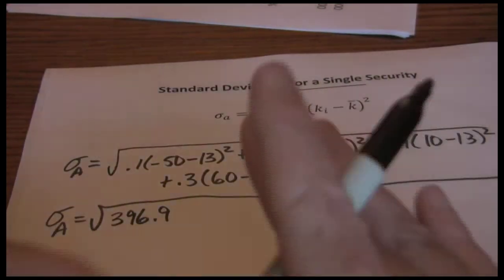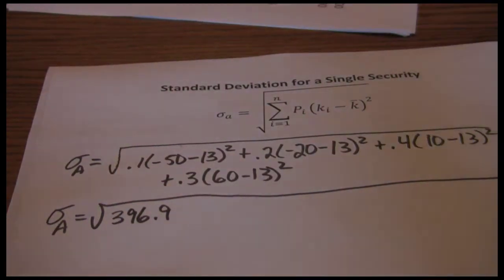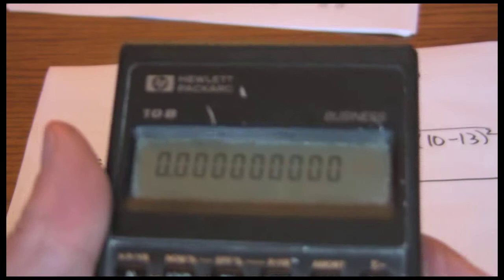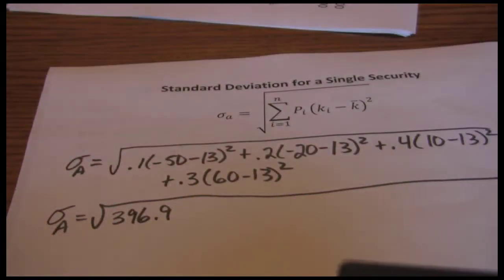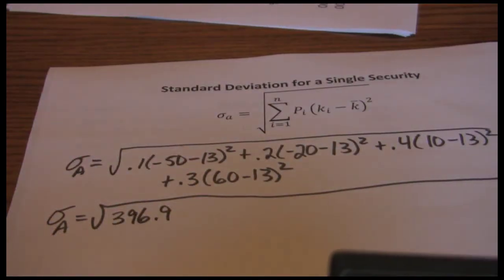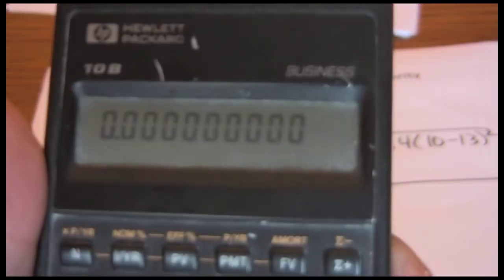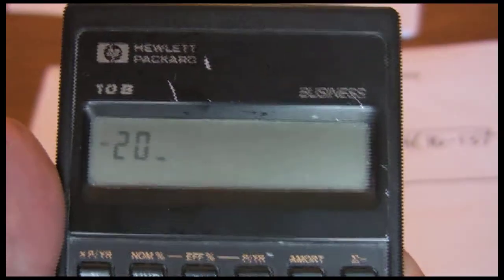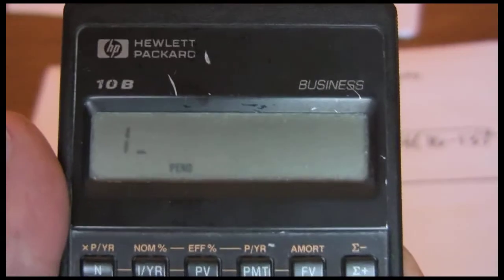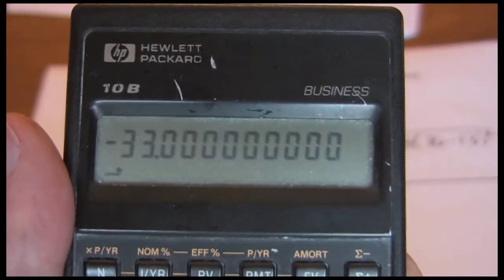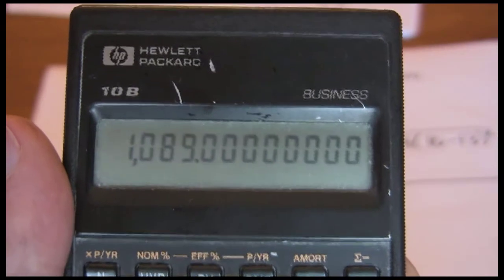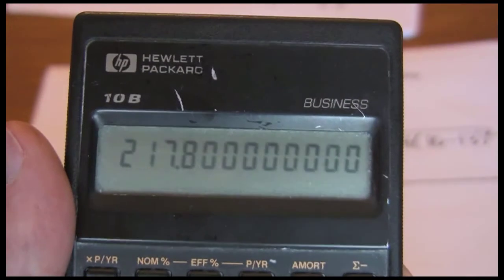Now we move on to the second outcome, which is negative twenty minus thirteen squared times .2. So negative twenty minus thirteen squared times .2 equals 217.8.